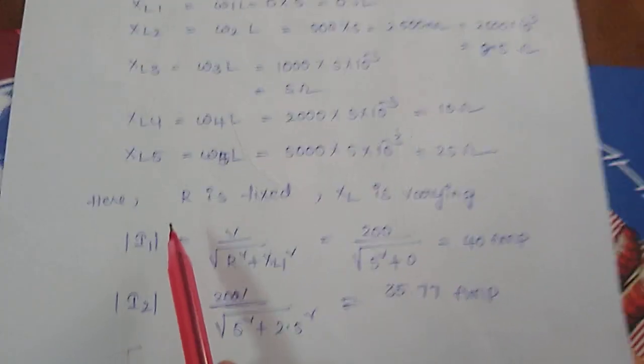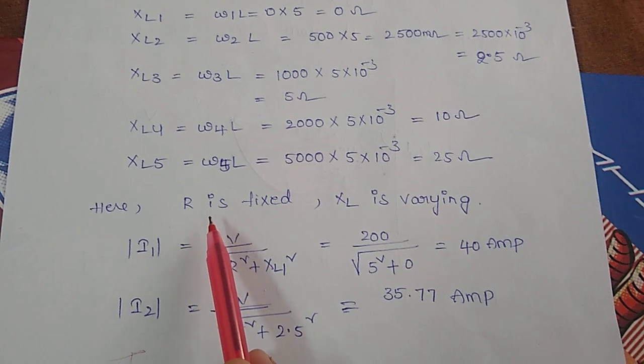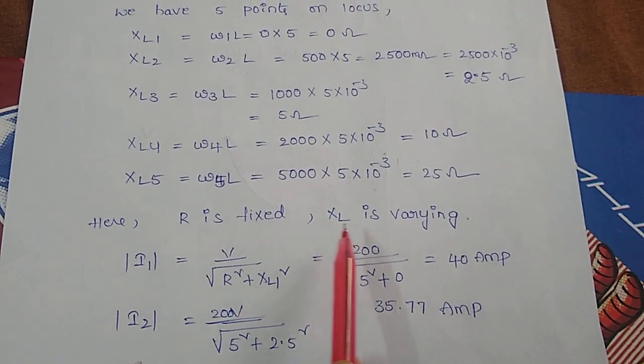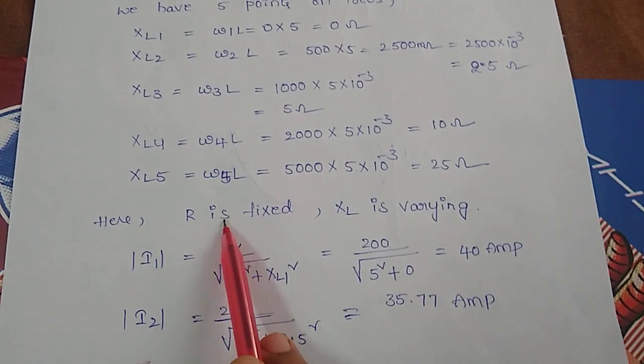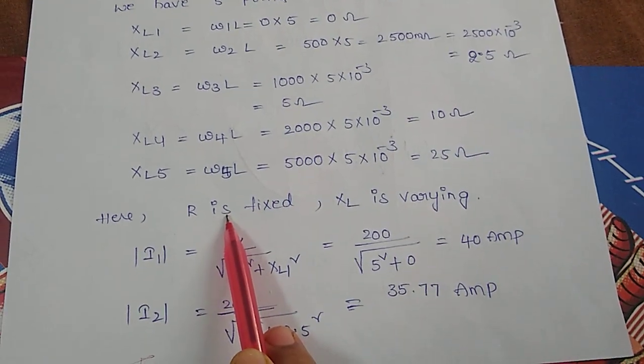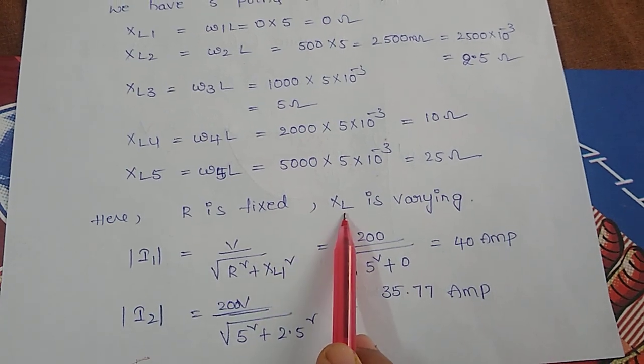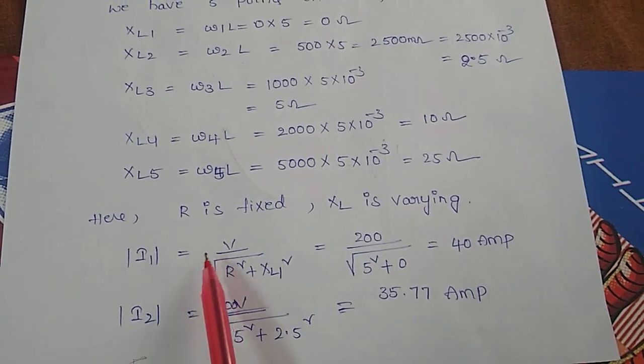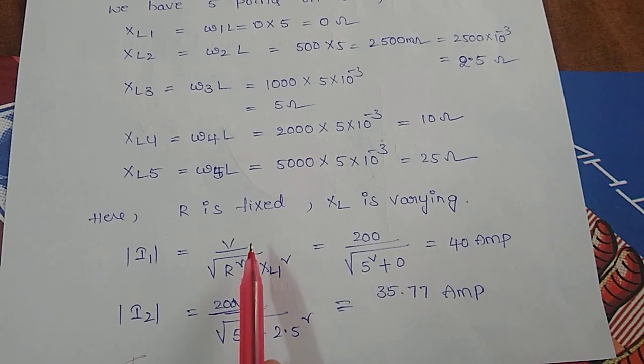Here for the given case we are only changing the value of angular frequency, that means XL value is changing. R value is fixed. Based on this concept we are going to find magnitude of current and its phase angle to draw the locus diagram.